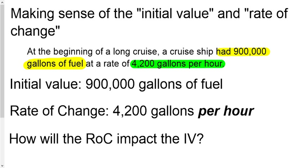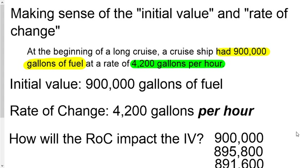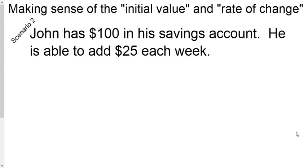How does that rate of change impact the initial value? You had 900,000 gallons of fuel at the beginning. After one hour, it burns off 4,200 gallons, leaving you with 895,800 gallons. After another hour, it burns another 4,200 gallons off, and you'd be even lower. So the rate of change is making the initial value go lower and lower.